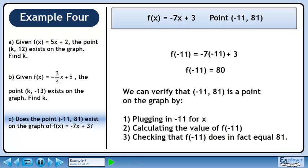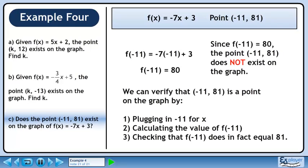f(-11) = 80. Since f(-11) equals 80, the point (-11, 81) does not exist on the graph.